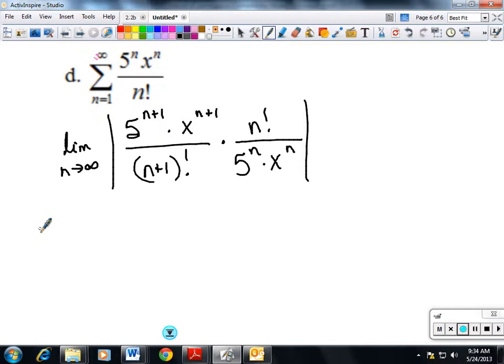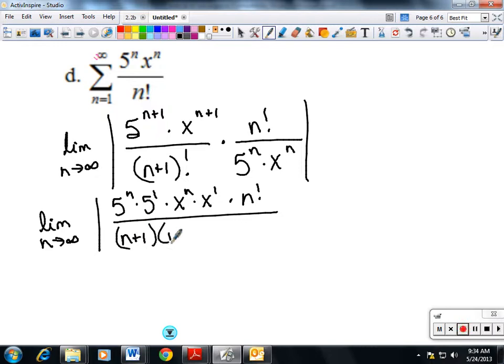So that's the limit as n goes to infinity of 5^n times 5^1 times x^1 times n factorial over (n+1) times n factorial times 5^n times x^n.